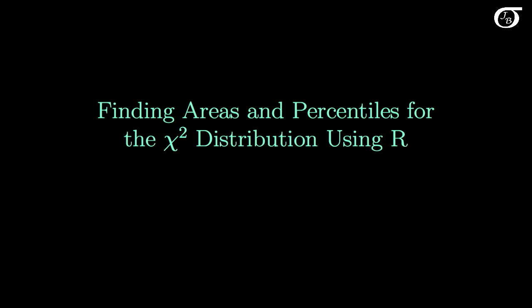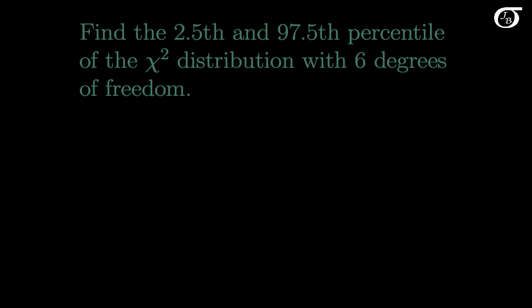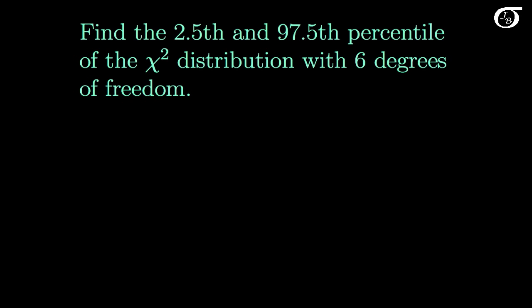Let's look at finding areas and percentiles for the chi-square distribution using R. Let's jump right to it and find the 2½ and 97½ percentile of the chi-square distribution with 6 degrees of freedom.